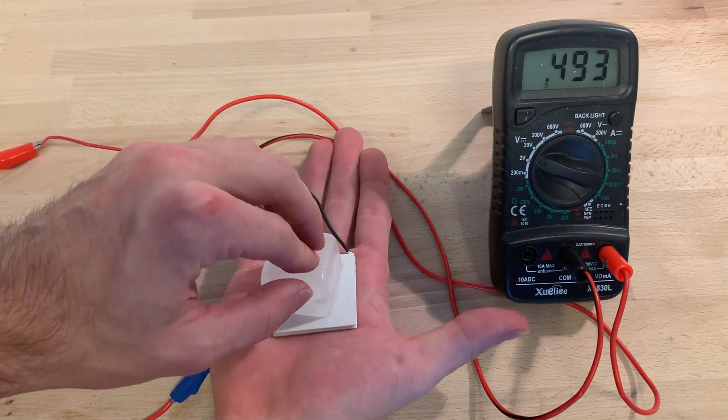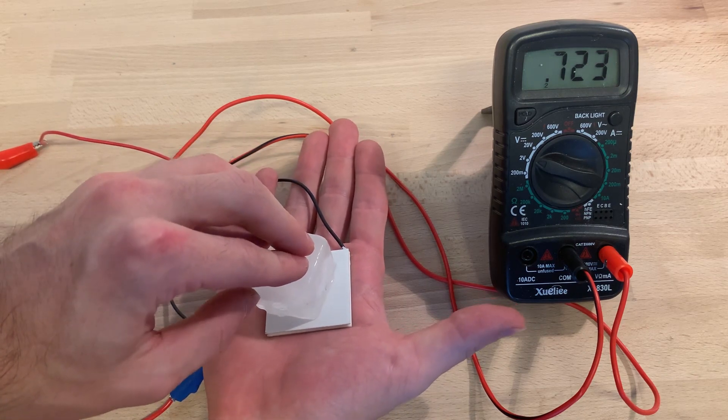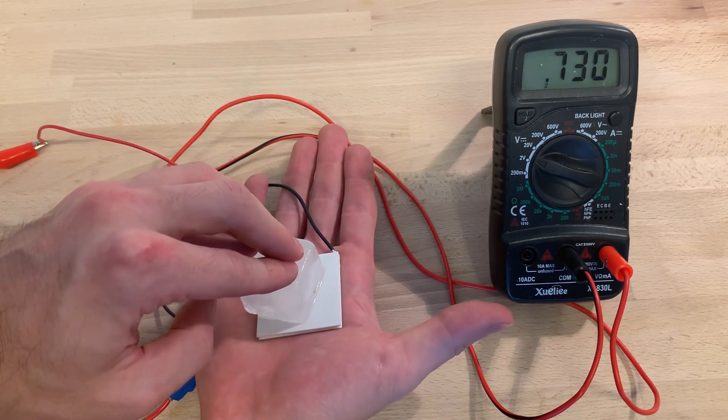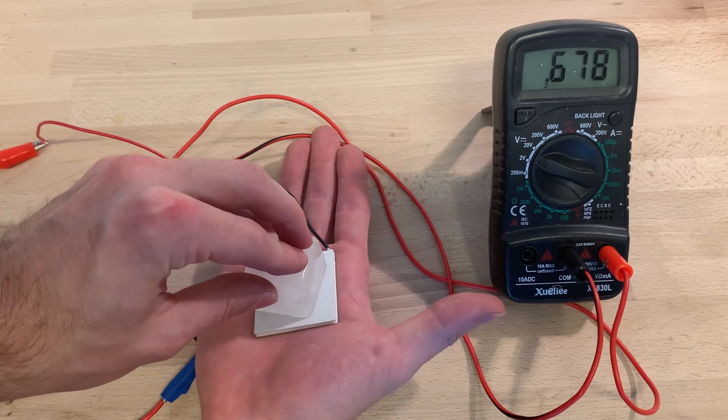The greater the heat difference, the higher the voltage. So it should be possible to build a generator out of Peltier, if we can generate a heat difference great enough.